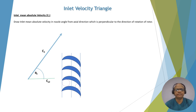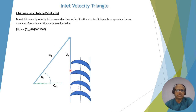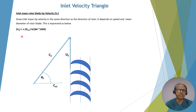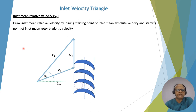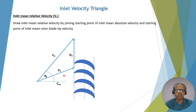In an impulse reaction turbine, the fixed blade acts as a nozzle. Now, U2 is the inlet mean tip velocity of the moving blade, drawn from one point to another. U2 equals pi times D2m times n divided by 60 times 1000, where D2m is the inlet blade mean diameter of the moving blade. The inlet mean relative velocity V2 is obtained by joining the starting point of C2 and the starting point of U2. This V2 encases the angle of the inlet blade angle. If you were on the moving blade, you would see the steam coming at an angle corresponding to V2.